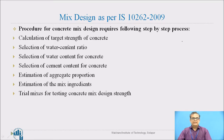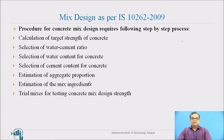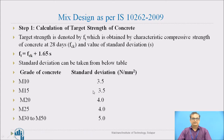The steps are: first, calculation of target strength of concrete; then selection of water-cement ratio; selection of water content; selection of cement content for concrete; estimation of aggregate proportion; and finally estimation of mix ingredients and trial mixes. These are the important steps we will see one after another.